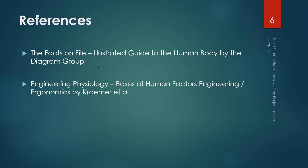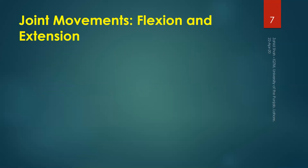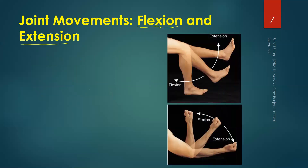The references for this segment are the same as for the previous segments: the book 'The Diagram Guide to the Human Body' by the Diagram Group, and 'Engineering Physiology: Basis of Human Factors Engineering/Ergonomics' by Kroemer et al. The first pair of movements we will see is flexion and extension.